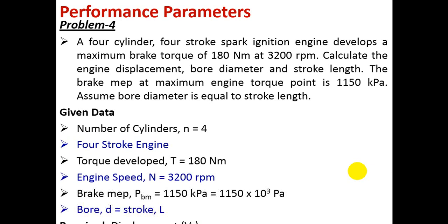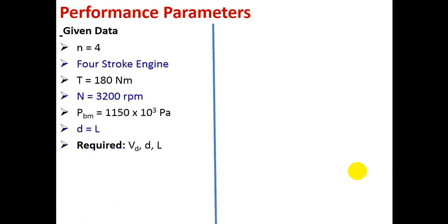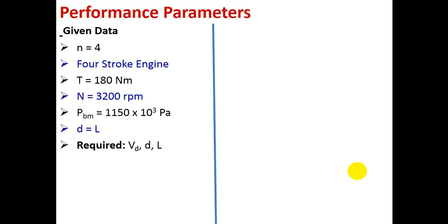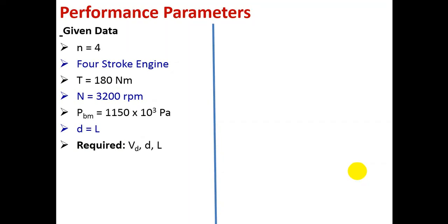The required data is displacement VD, bore diameter D, and stroke length L. To find D and L, first use the brake power formula BP = 2πNT/60. From this, find brake power. Then use the second brake power formula: BP = P × L × A × N × (N/2) / 60.